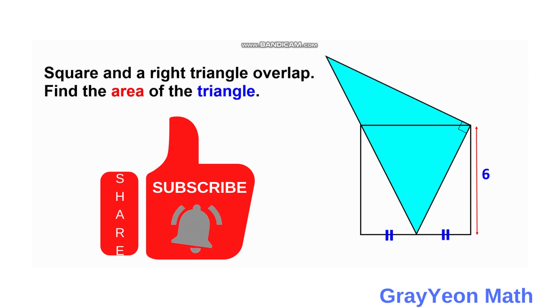Welcome to GrayonMath. We are asked to solve this problem. We have a square and a right triangle that overlap with each other. We are required to find the area of the triangle.